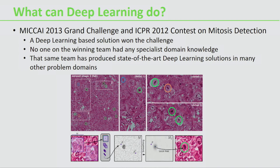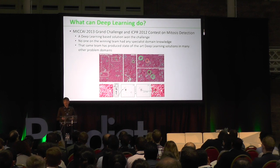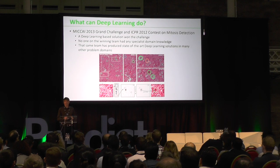Generally a number of experts have to work together to achieve higher accuracy. However, a deep learning-based solution won this particular challenge a few years ago. Interestingly, no one on the winning team had any specialist domain knowledge or knew anything about mitosis detection — they certainly weren't trained experts who'd spent years studying this task. That same team has produced state-of-the-art deep learning solutions in many other problem domains. The algorithms themselves have the ability to learn that domain knowledge once provided with enough data.